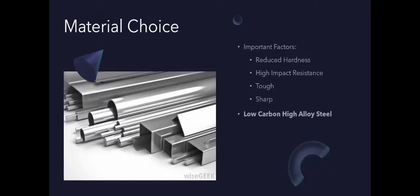Therefore, a typical type of steel used to produce lawnmower blades is low carbon high alloy steel, which is of eutectoid composition. Low carbon high alloy steel has a high impact resistance and toughness with reduced hardness.